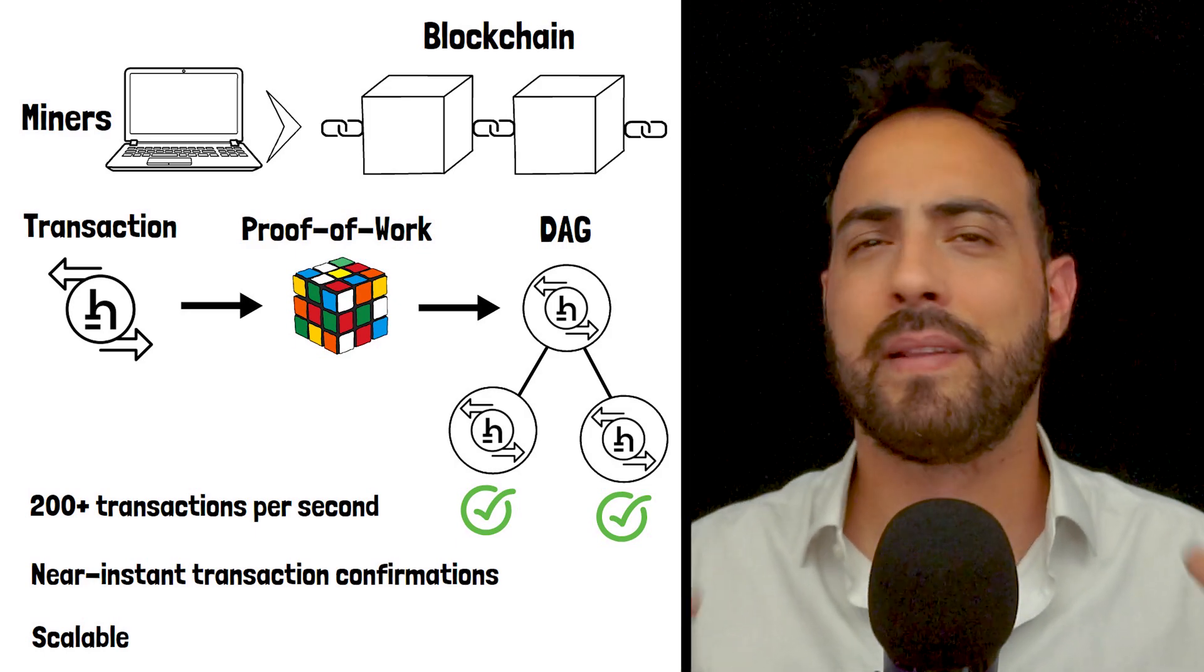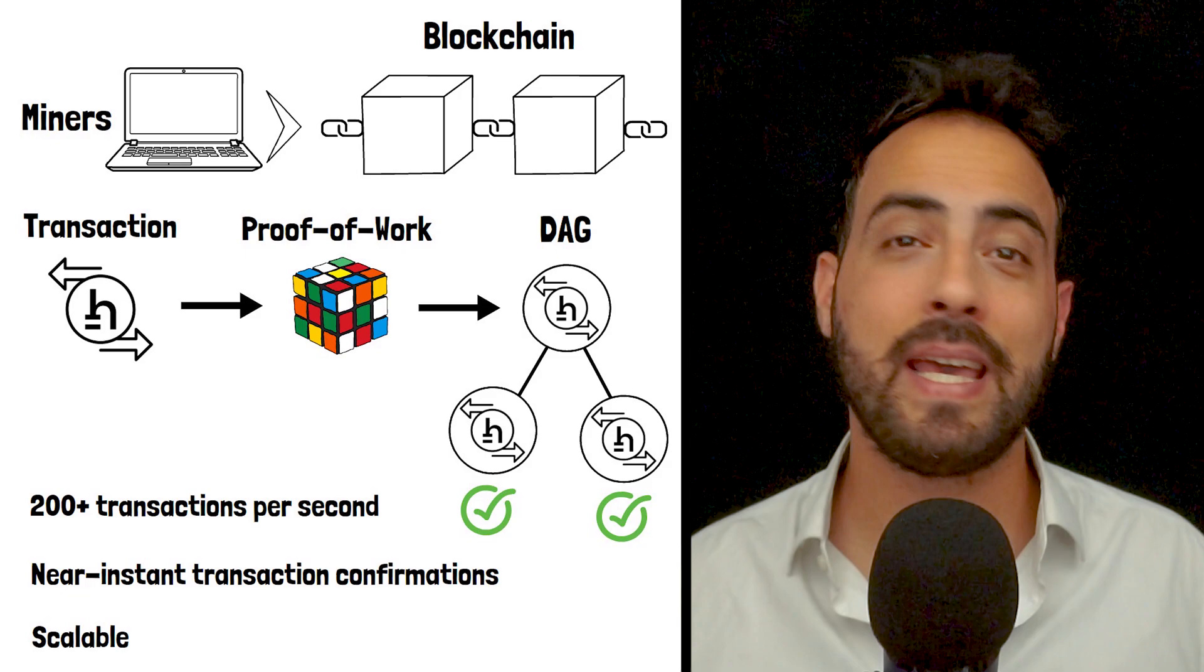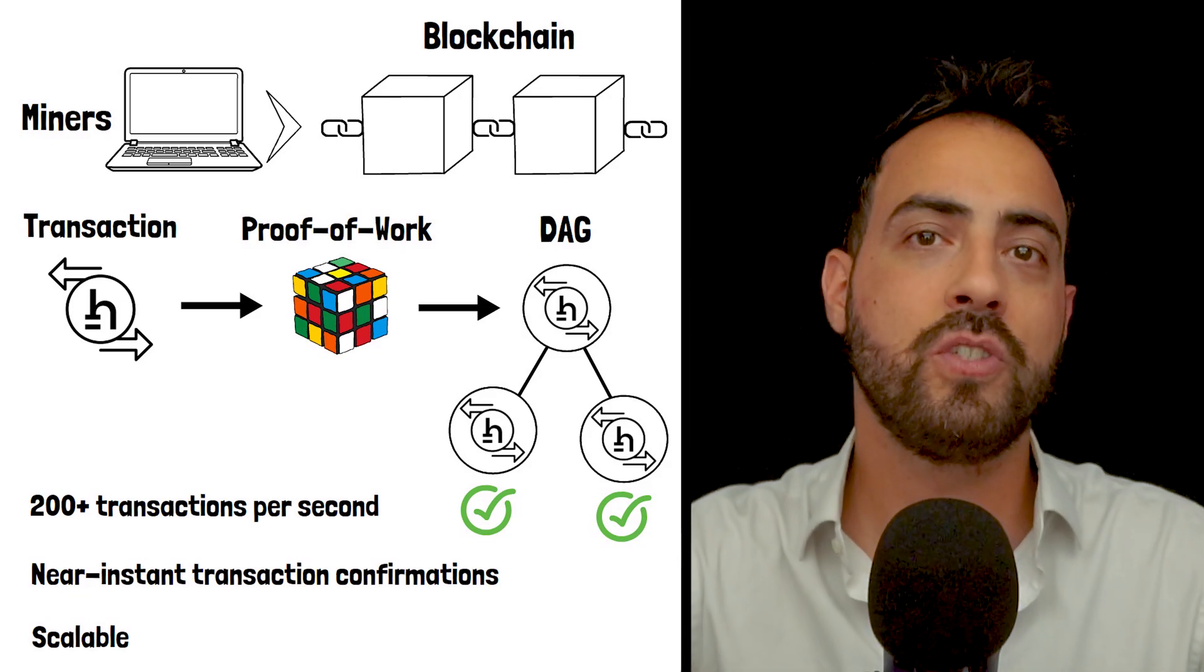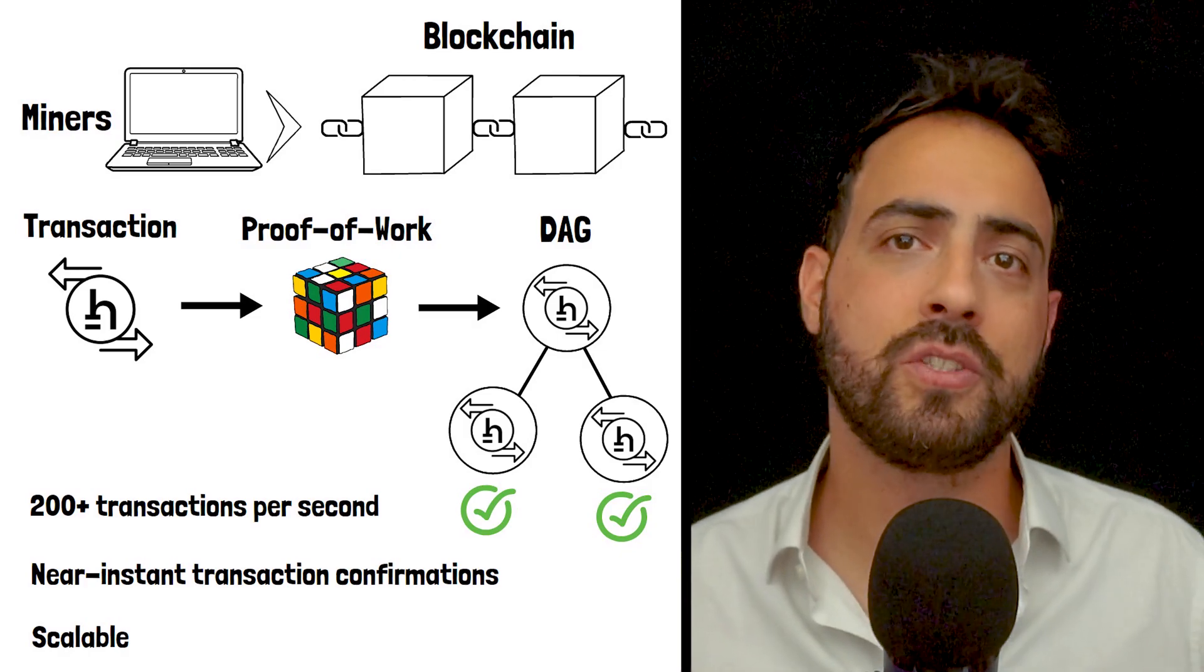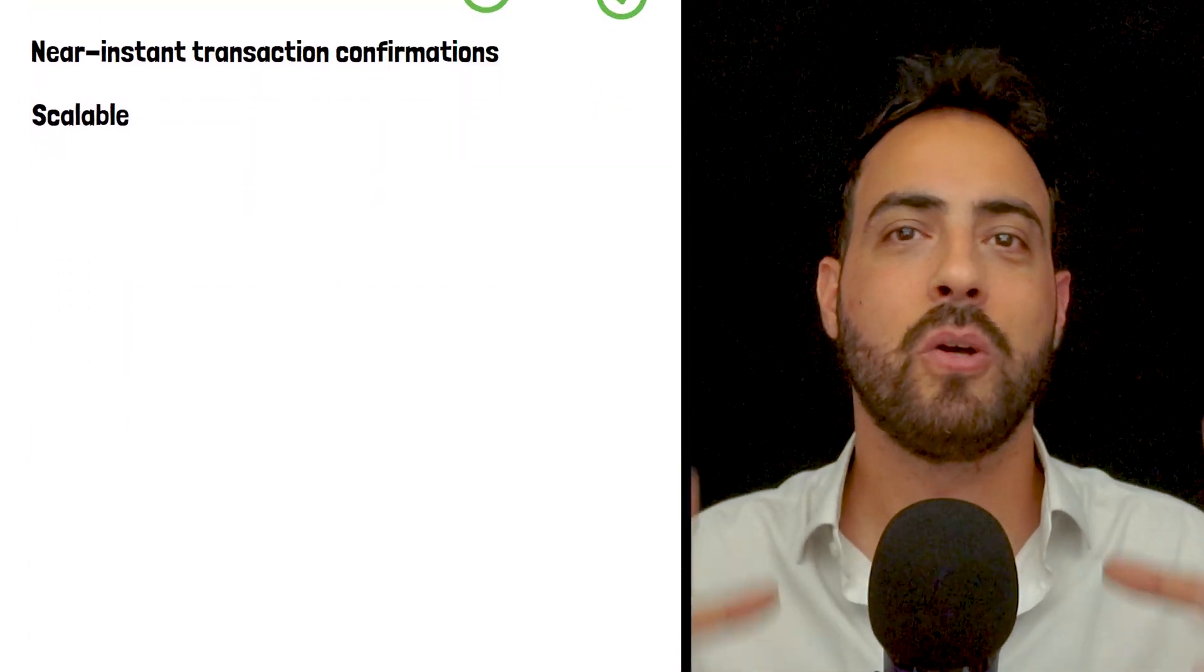It's a complex system, but the end result is a cryptocurrency that aims to provide the best of both blockchain and DAG technologies. Now that we know exactly how Hathor works, let's talk about one of Hathor's most innovative features, nano-contracts.